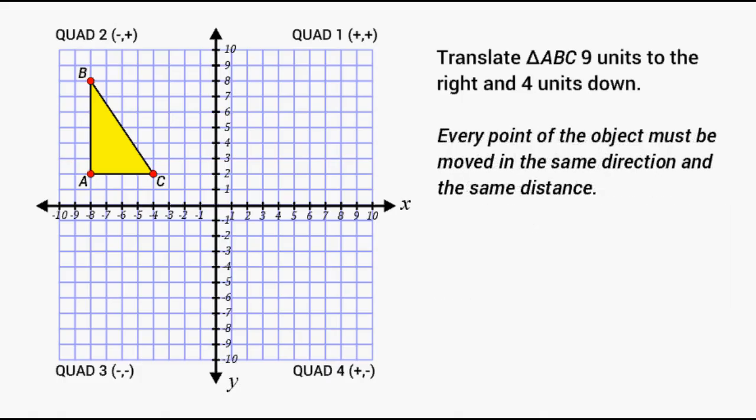Now after translating this object we should understand that every point of the object must be moved in the same direction and the same distance. That way the resulting object will be congruent to its original.